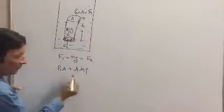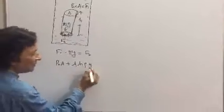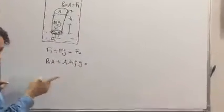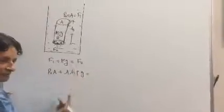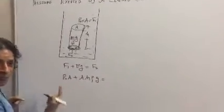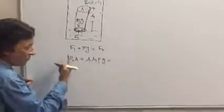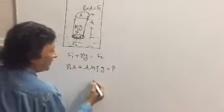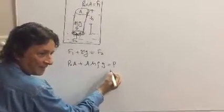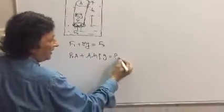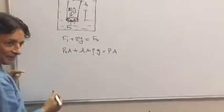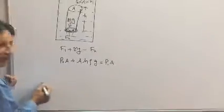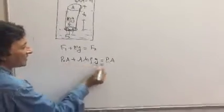What is F2? F2 is the net force which is exerting the upward force. That is the net pressure here, P into A. Or you can say it is P1 into A.